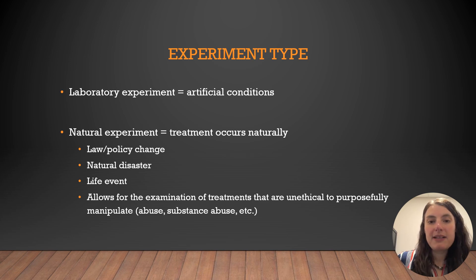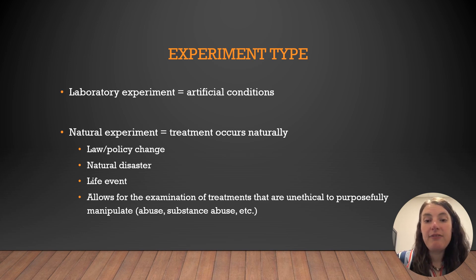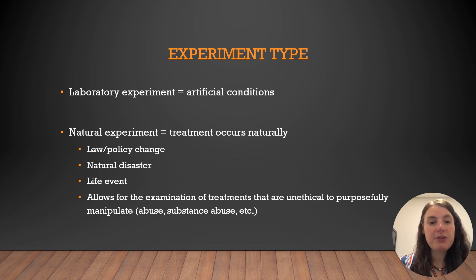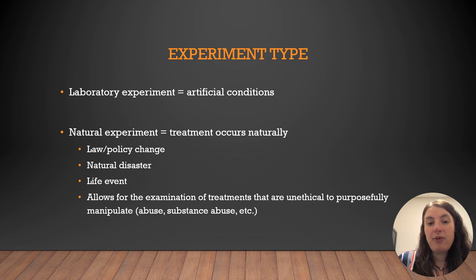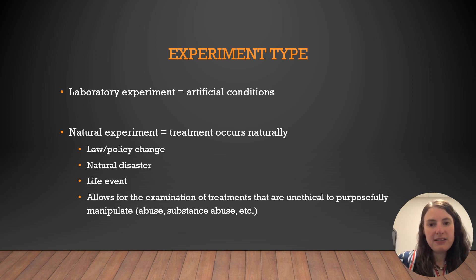There are also things called natural experiments. All of the previous experiments are considered lab experiments because there's some artificiality in the experimental design — the researcher is purposefully manipulating events, moving people, and making decisions. However, natural experiments involve no researcher manipulation. Instead, these are treatments that happen outside of the researcher's control that are then studied using a before and after approach. In social science, natural experiments may focus on a law or policy change or a natural disaster to see the impact on the entire population. They may also focus on life events like the date of a person's marriage or the death of a loved one — events that cannot be ethically controlled by the researcher — so we use a natural experiment to study them before and after.